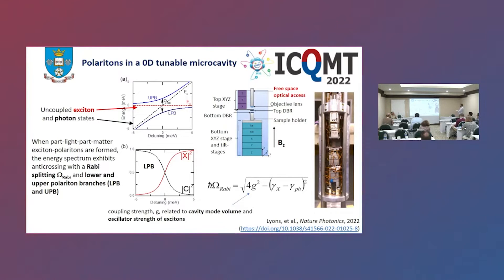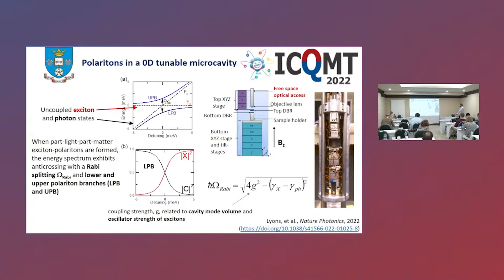The onset of polaritons is quite clearly defined by this anti-crossing between the lower polariton branch (LPB) and upper polariton branch (UPB). If we focus on the LPB: when negatively detuned from resonance, we're highly photonic. As we tune through the resonance and beyond, we become highly excitonic. At the point of maximum Rabi splitting — defined as the minimum distance between UPB and LPB — we have a maximum 50-50 share between the exciton part and the cavity part. The strength of this Rabi splitting is directly related to the cavity mode volume and the oscillator strength of the excitons.